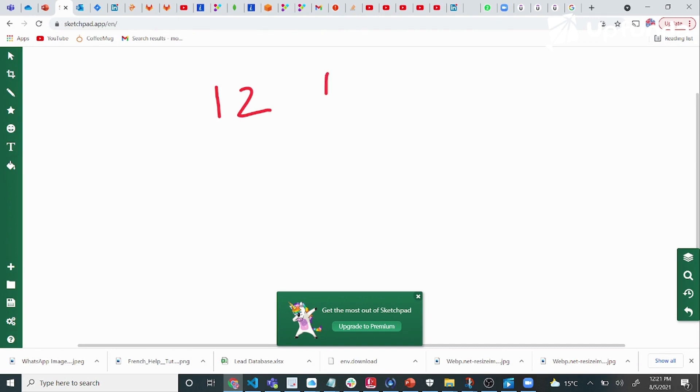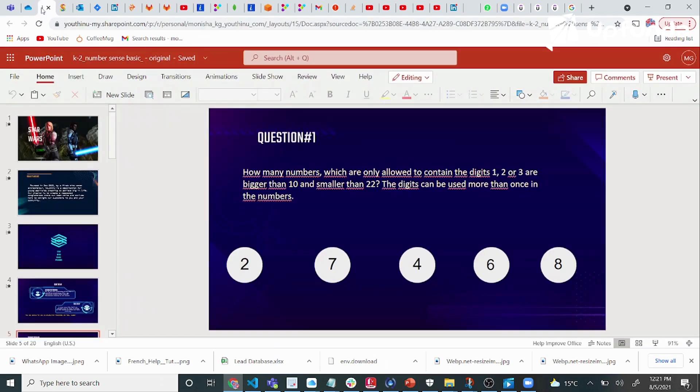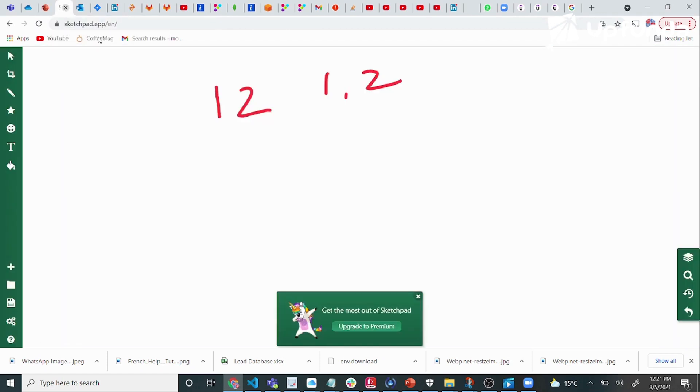Now the question is, what are the numbers that are bigger than 10 and smaller than 22? Bigger than 10, we can start writing: 11, 12, 13, 14, 15, 16, 17, 18, 19, 20, 21.